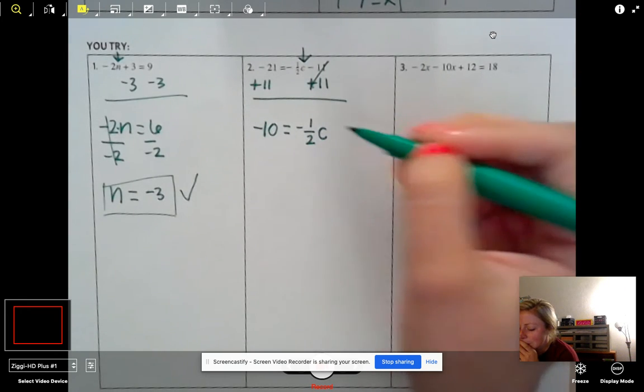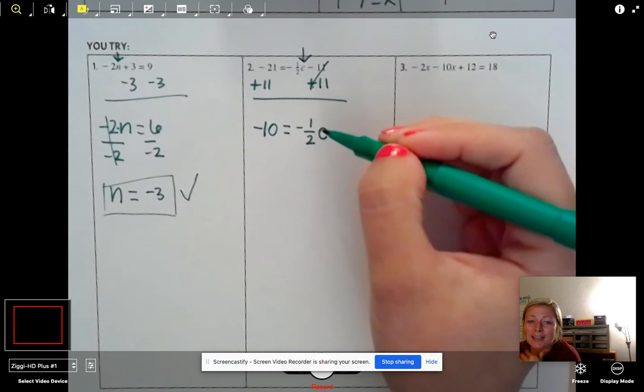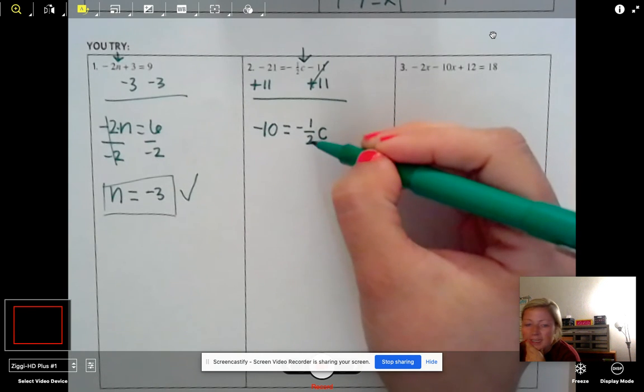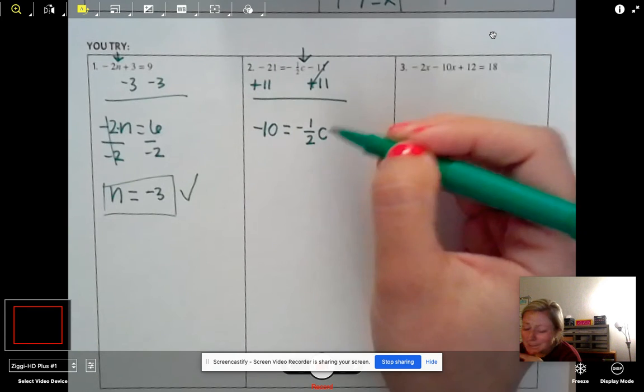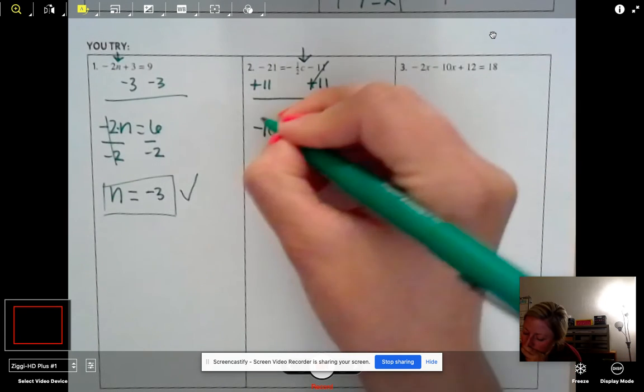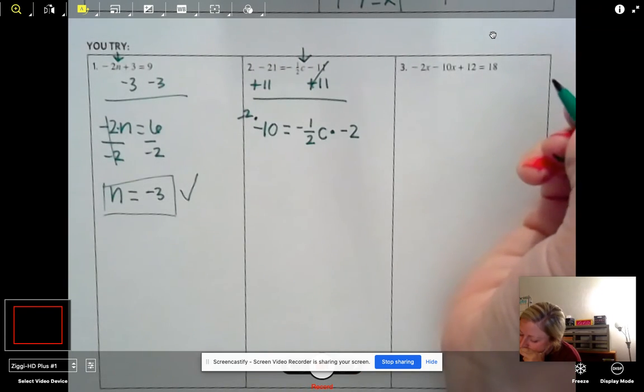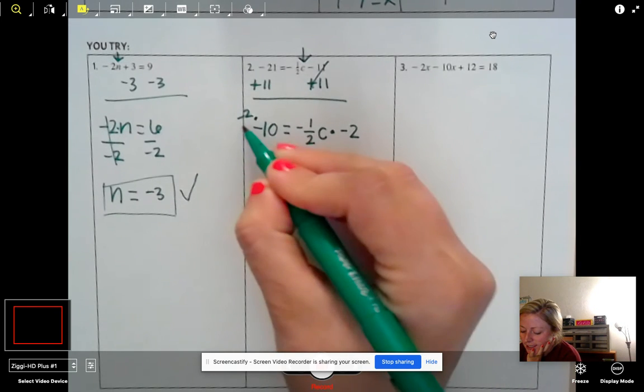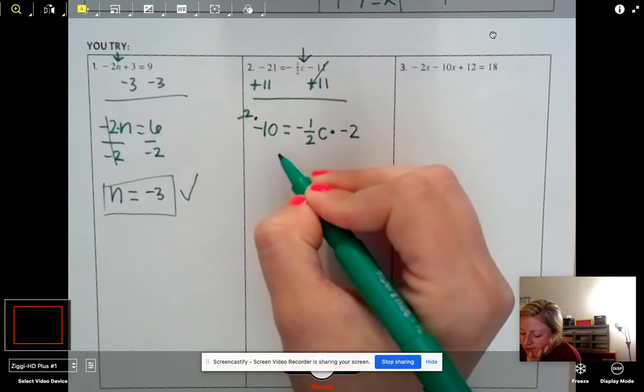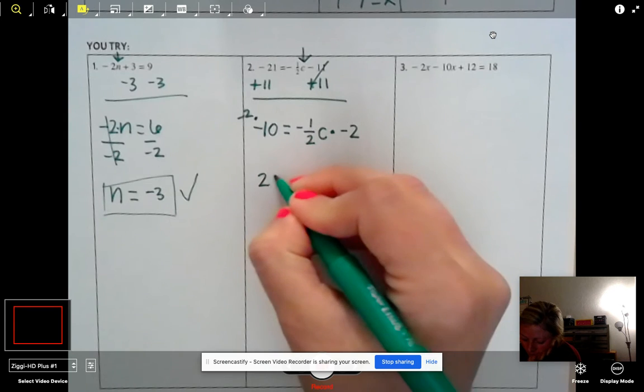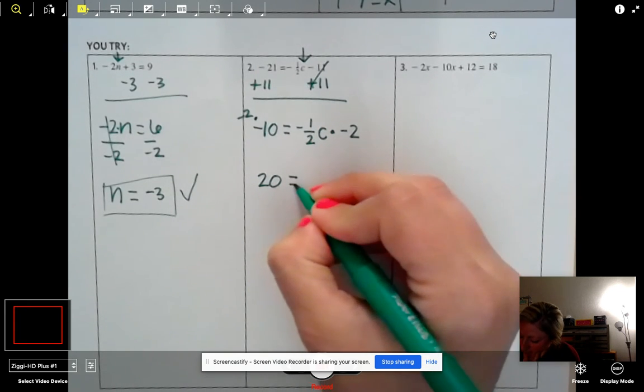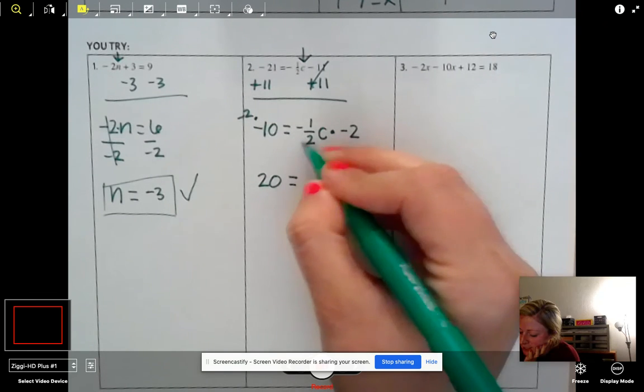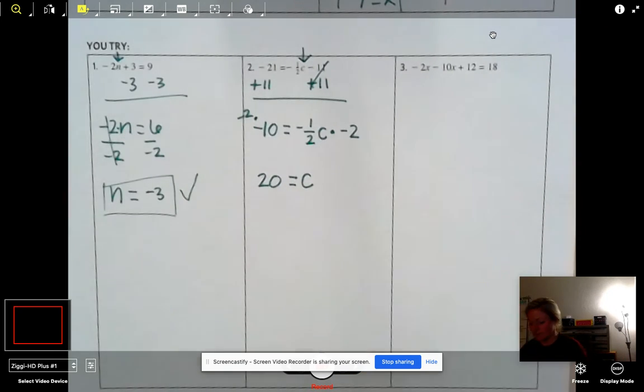Well, remember that fraction bar really just means to divide. So right now I'm saying divide by negative two. Well, what's the opposite of dividing by negative two? Multiplying by a negative two. Multiply both sides by negative two. So if I do that here, negative two times 10 is positive 20. And negative two and this negative two cancel. So we're just left with a C. So 20 equals C.